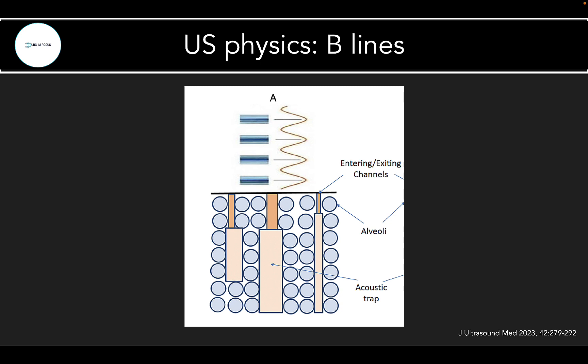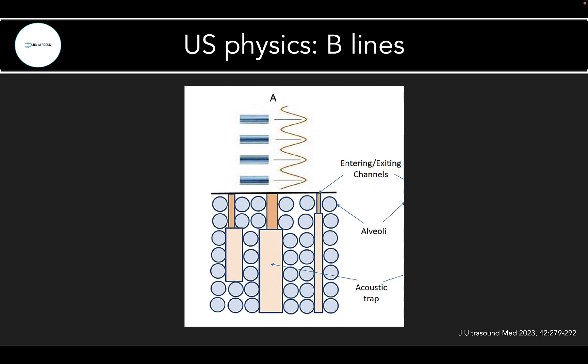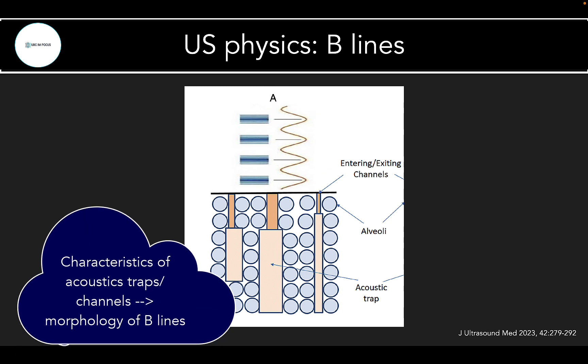A bit of physics on how B-lines are actually generated — this will become relevant as we talk about different pathologies. B-lines are generated due to the presence of acoustic traps and channels, formed when lung pathology disrupts the normal architecture and changes the ratio of aerated to non-aerated spaces. Things like infiltration of the interlobular septa, filling of the interstitial space with water or inflammatory exudate, and partial loss of air spaces all form these traps. As the ultrasound beam partially penetrates the pleura, small reflections within the traps and channels generate vertical artifacts, and the characteristics of those traps influence the appearance of the B-lines.